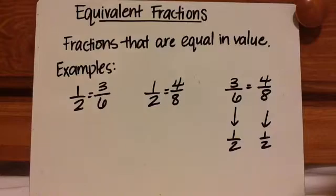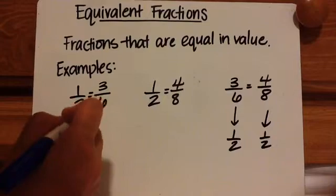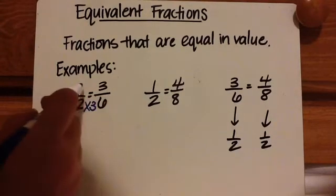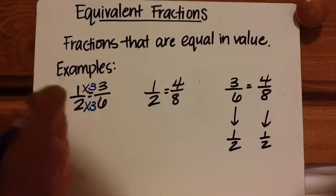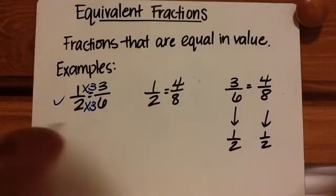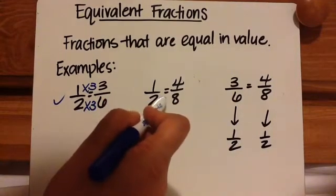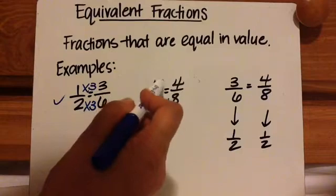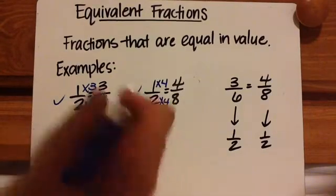Looking at this example, we have one-half equals three-sixths. In this situation, I am doing two times three equals six, so I'm going to do the same to the top. And yes, they are equal. One-half equals four-eighths — two times four equals eight, one times four equals four. So these are also equivalent.